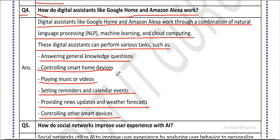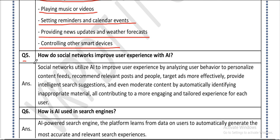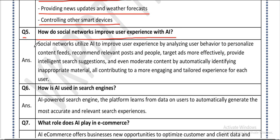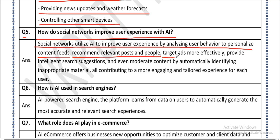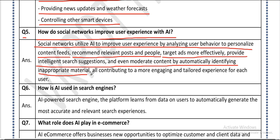Question five: how do social networks improve user experience with AI? Answer: social networks utilize AI to improve user experience by analyzing user behavior to personalize content feeds, recommend relevant posts and people, target ads more effectively, provide intelligent search, and even moderate content by automatically identifying inappropriate material, all contributing to a more engaging and tailored experience for each user.